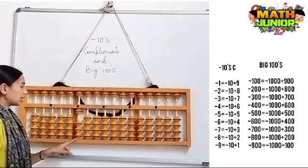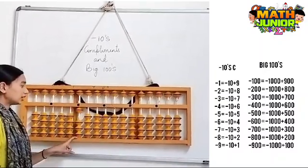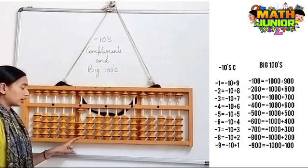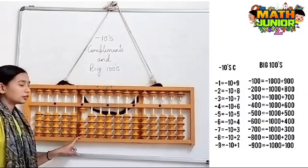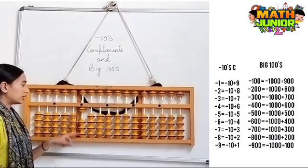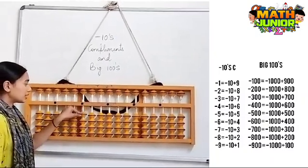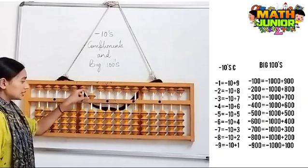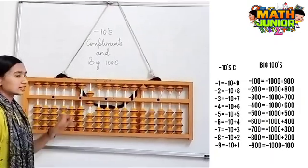Next, I have 1000 here and I need to remove 400. So the formula for minus 400 is minus 1000 plus 600.